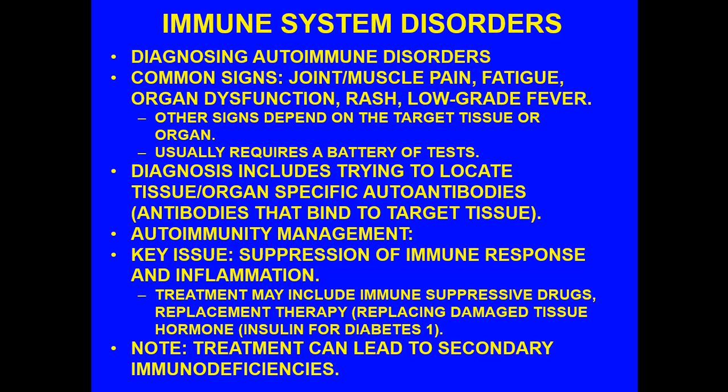The diagnosis includes trying to locate tissue or organ-specific antibodies that bind to the target tissue. To manage an autoimmune reaction, the key issues are suppression of the immune response and suppression of inflammation. Treatment may include immunosuppressive drugs and replacement therapy — for example, if the thyroid is badly damaged, you replace T3 and T4 thyroid hormone; if the pancreatic beta cells are destroyed, you replace the insulin they were making. The treatment itself can lead to secondary immunodeficiencies depending on the intensity of the immunosuppressive drugs used.